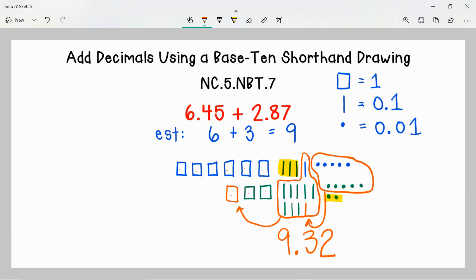And so that lets me know that 6.45 plus 2.87 is 9.32. And I know that answer is reasonable because when we started out here we estimated and I thought that the answer should be around 9. And 9.32 is just 32 hundredths more than that estimate, which is really pretty close. So I know that answer is reasonable. And this is how we can use a Base-10 shorthand drawing to add two decimal numbers.